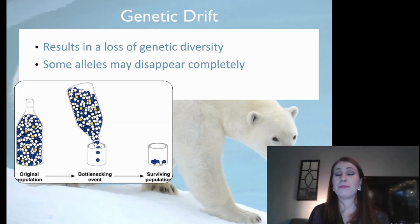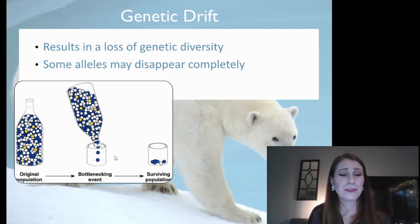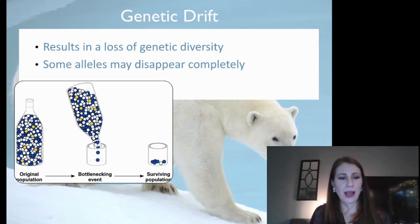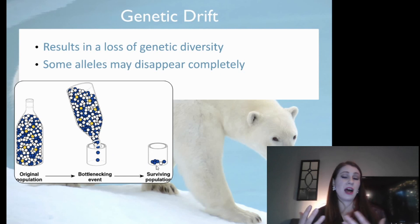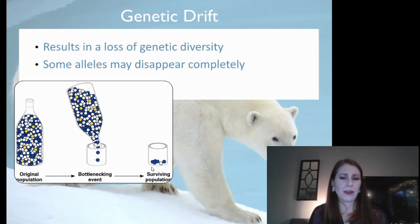We call this bottlenecking. If we take an original population and shipwreck some of our humans on an island by themselves, we call that a bottlenecking event. The surviving population may have no more yellow alleles — only blue and one white allele. So the white allele becomes not very common, whereas in the normal population it was pretty common. This changes the percentage at which you see those alleles.